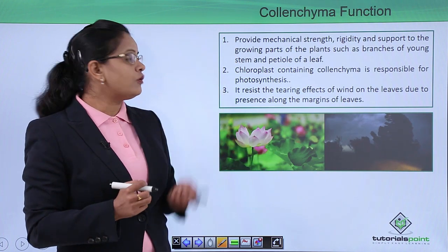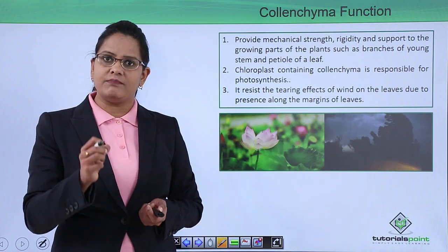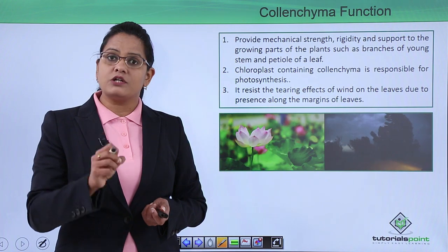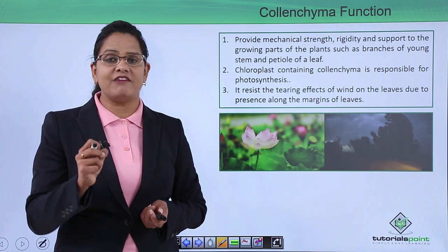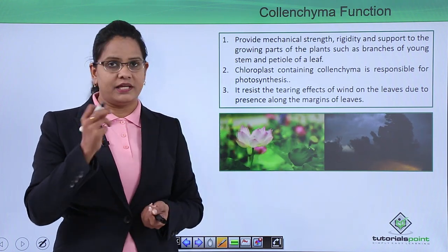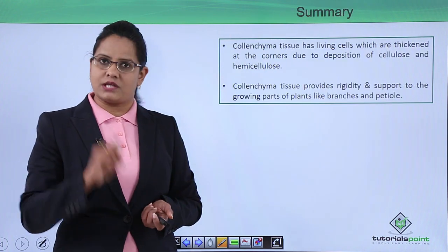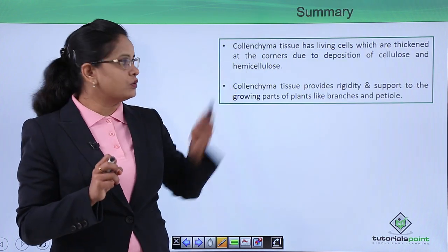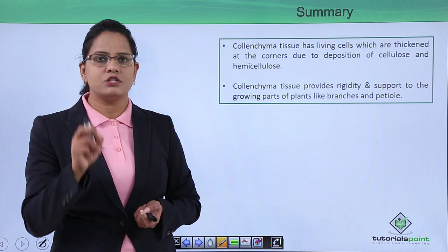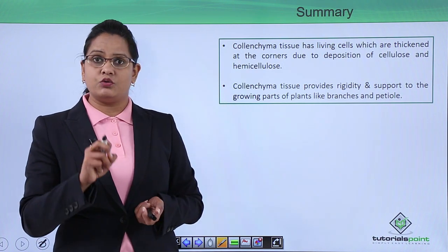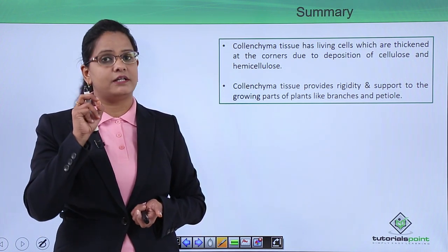Colenchyma cells that contain chloroplasts will perform photosynthesis, since they are living cells. It is also because of colenchyma that soft organs like leaves do not tear in heavy wind — you rarely see leaves torn up by wind, and that is due to the presence of colenchyma cells. To summarize: colenchyma tissue has living cells thickened at the corners, with thickenings made up of cellulose, hemicellulose, or pectin. It provides rigidity and mechanical strength so plants can face environmental stresses like wind efficiently.